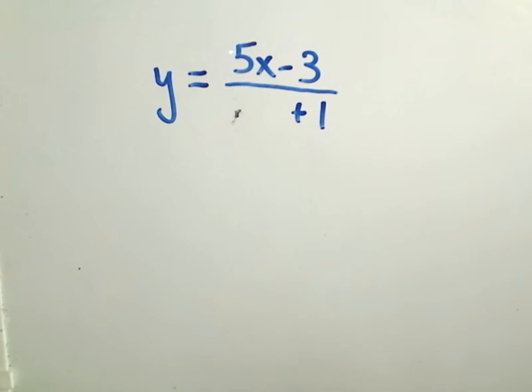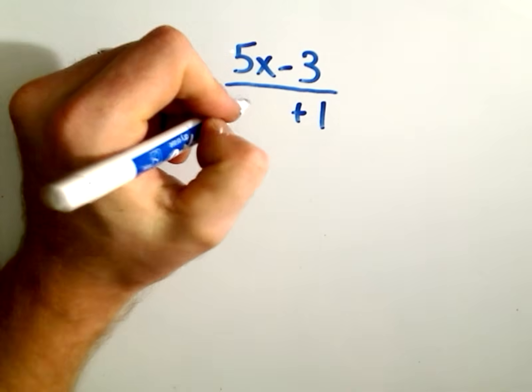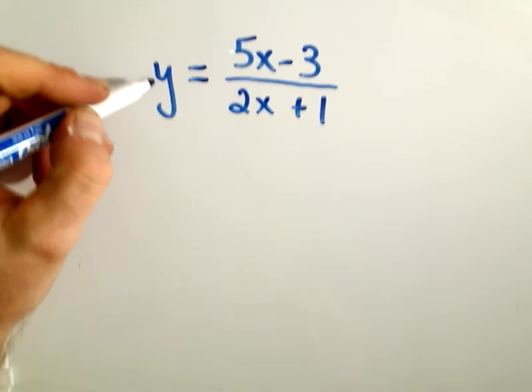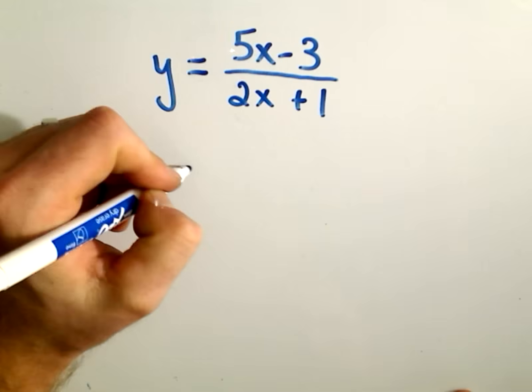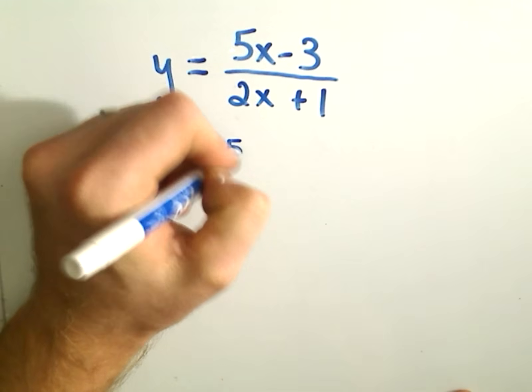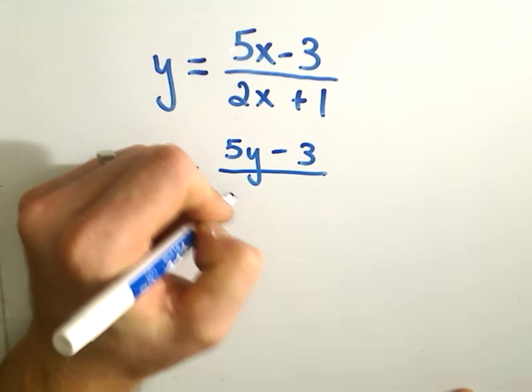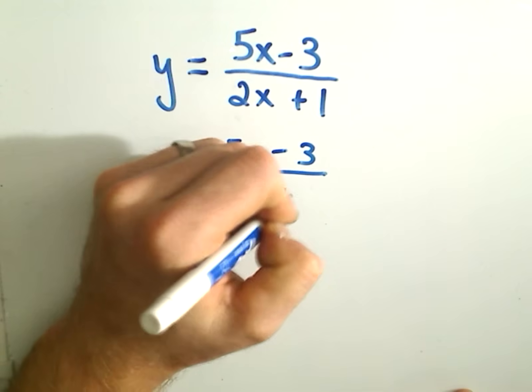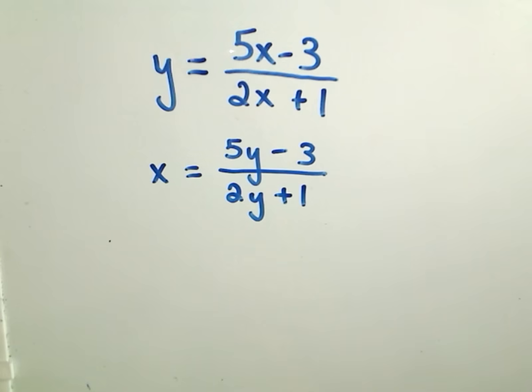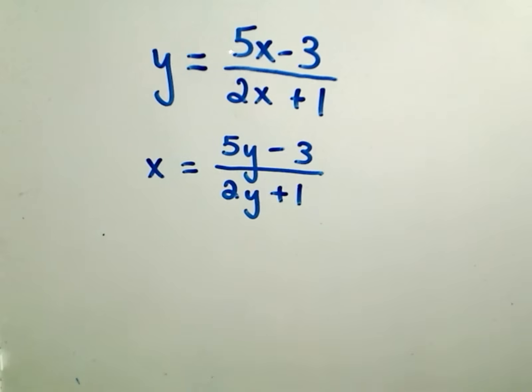So the first thing I'm going to do is replace the y with an x. And then again, everywhere there was an x on the right side, I'm going to make that a y. So now all I have to do again is I want to get y by itself. So I think that might be a little more tedious in this case, but the first thing I would do is, well, there's a fraction.